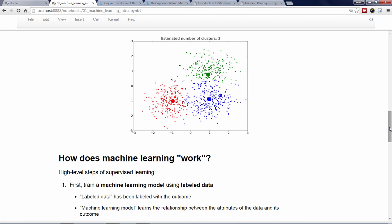This is called model training because the model is learning the relationship between the attributes of the data and the outcome. These attributes might include the message text, the number of embedded links, the length of the message, and so on.